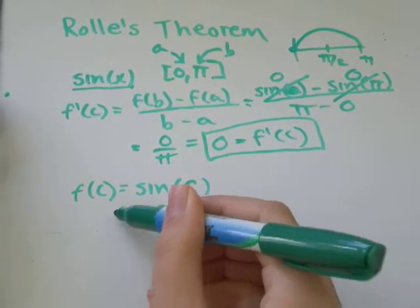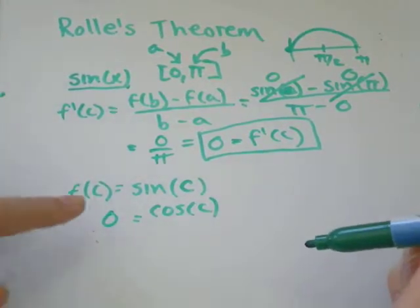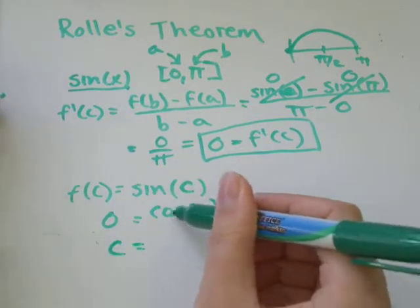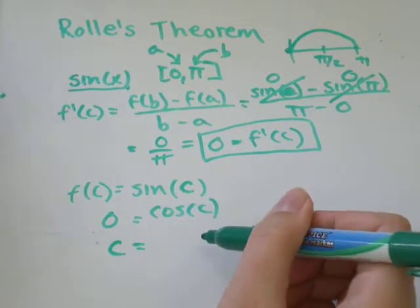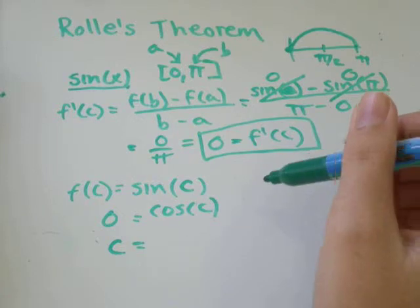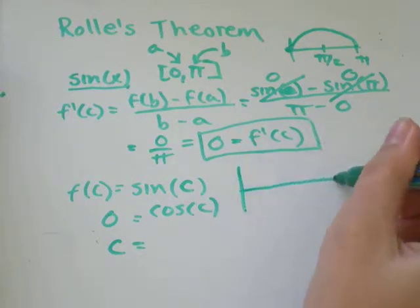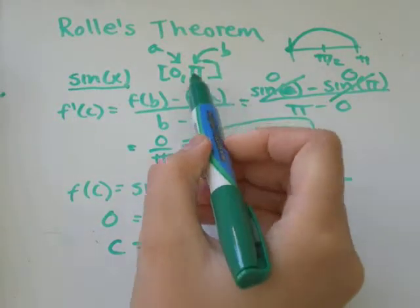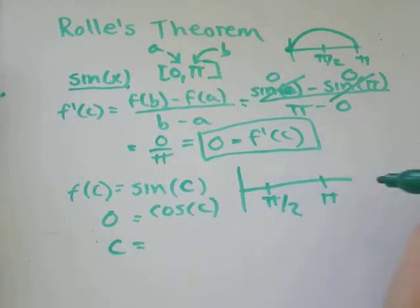So let's replace f prime of c with zero. Now we just need to ask ourselves, where does cos c equal zero? When c is equal to what number? Let's think about the graph of cosine.